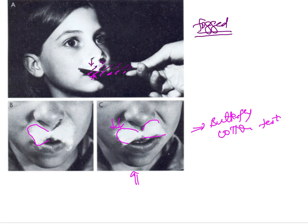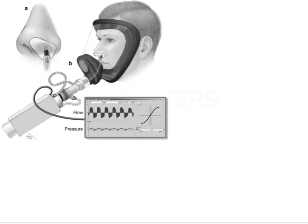In the butterfly cotton test, if the patient is not a nasal breather at all, then none of the wisps are going to move, indicating that respiration is taking place through the oral cavity rather than through the nose. Although all of these clinical tests are helpful in their own way, the gold standard for evaluating whether the patient is breathing through the mouth or through the nose is rhinomanometry — the only reliable method to quantify the amount of air passing through the nose and through the mouth.